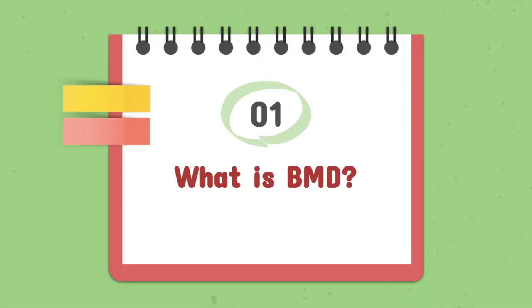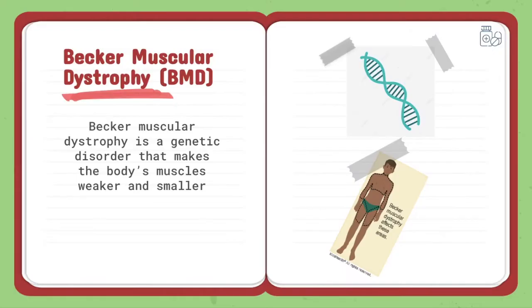What is BMD? BMD is a genetic disorder that makes the body's muscles weaker and smaller. This disease is a much slower and progressive disease in comparison to Duchenne muscular dystrophy, the most common type of muscular dystrophy. With proper treatment, individuals with BMD can live well into their 40s and 50s.